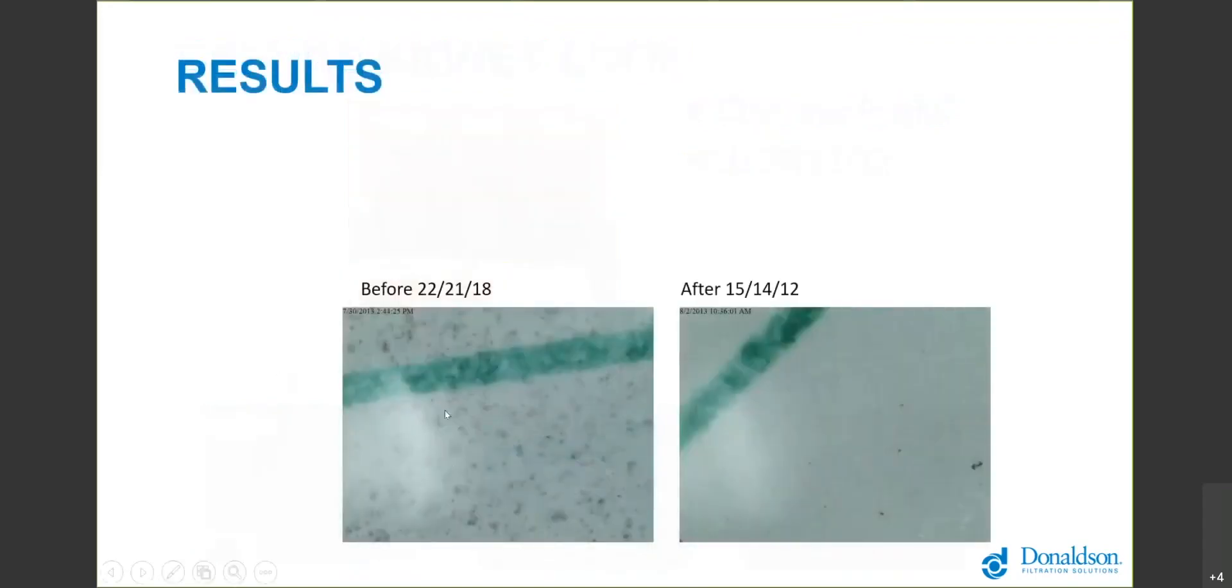After three hours of kidney loop filtration, we went from the image on the left which is an ISO code of 22/21/18 to an ISO code on the right of 15/14/12. Overall it's about a 64 times improvement, 64 times cleaner from the left image to the right image, and you can visually see the improvement.